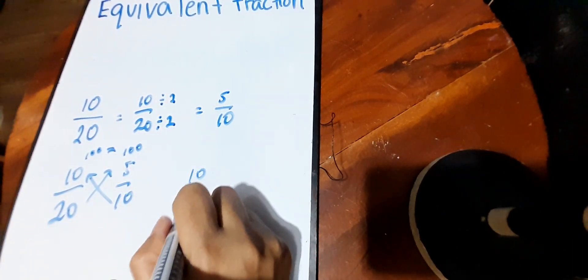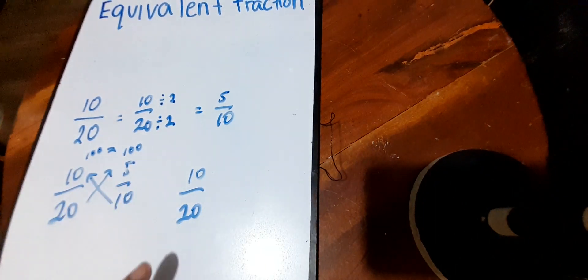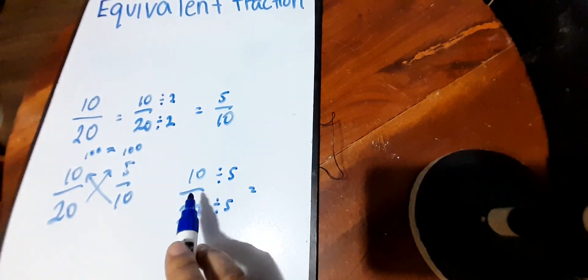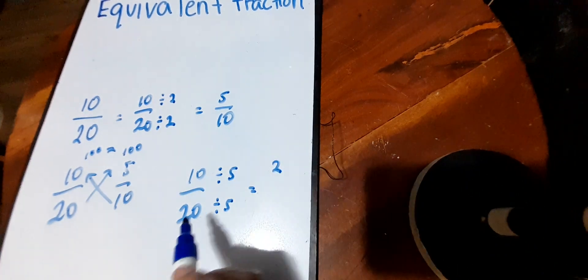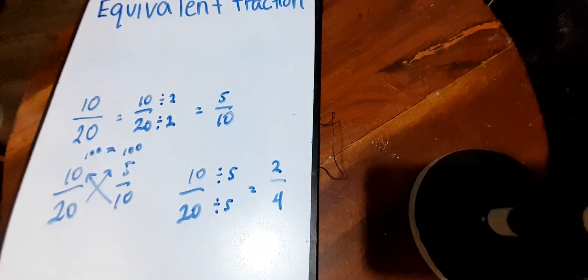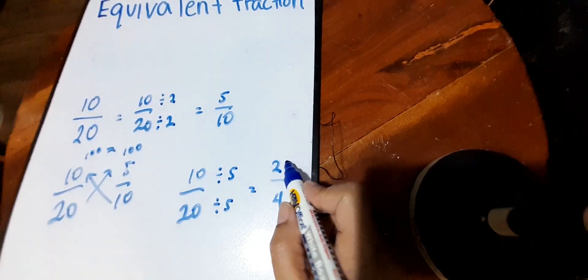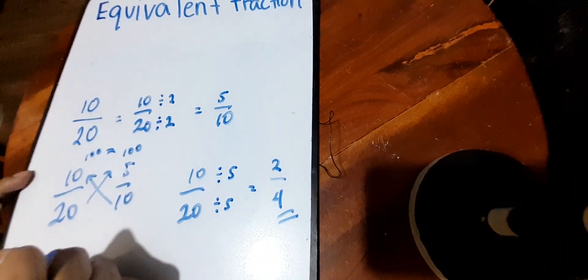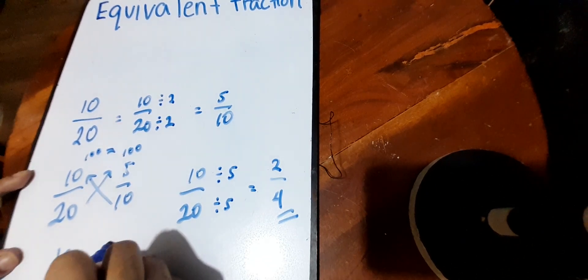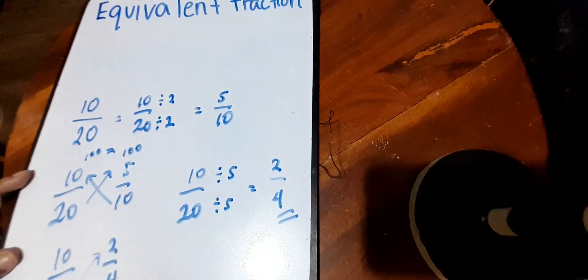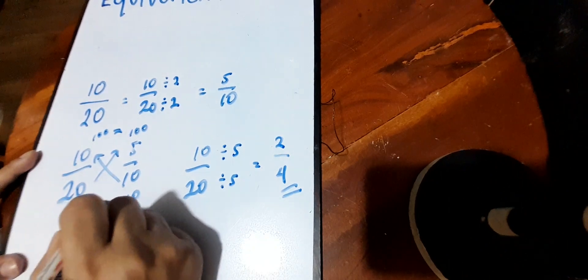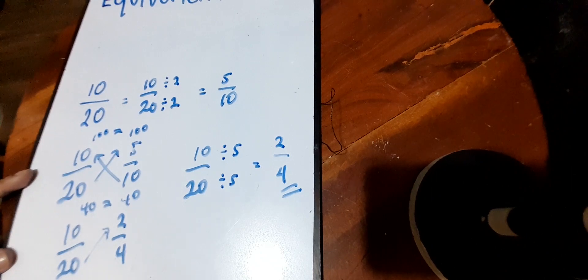For ten over twenty, there's also another number we can divide by — five. Ten divided by five gives two, and twenty divided by five gives four. So two-fourths. Let's check if two-fourths is also an equivalent fraction of ten over twenty. Two times twenty is forty, and ten times four is forty. So they are equal — ten over twenty and two-fourths is also an equivalent fraction.